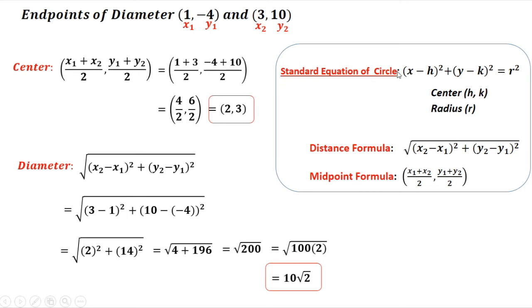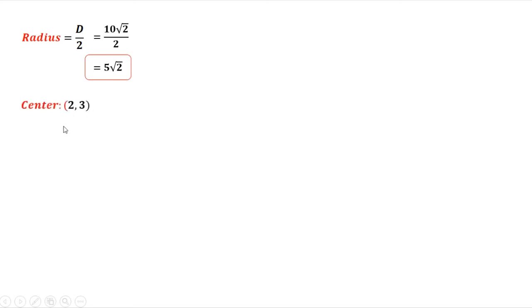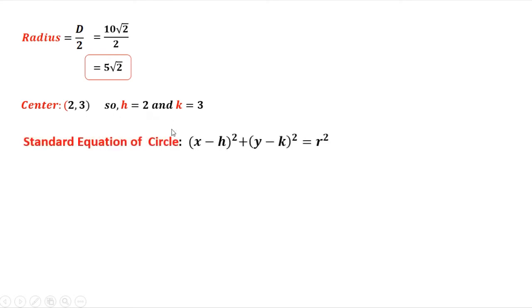Since our formula requires the radius, and radius is half of the diameter: diameter divided by 2. Our diameter is 10√2, divided by 2, gives 10/2 = 5, so the radius is 5√2. The center is (2, 3), so h = 2 and k = 3.